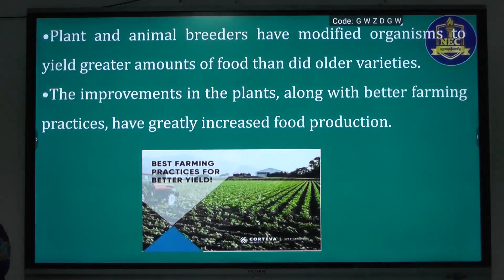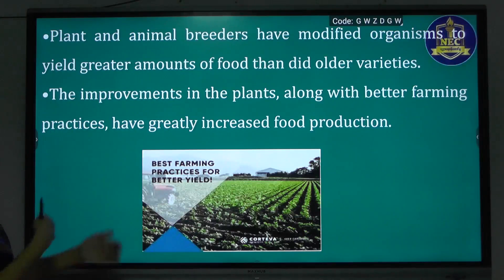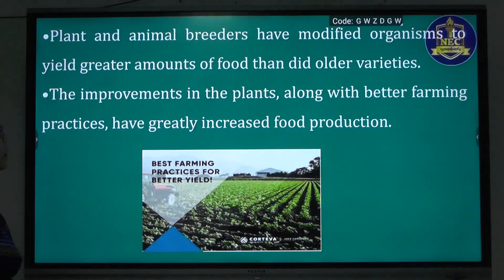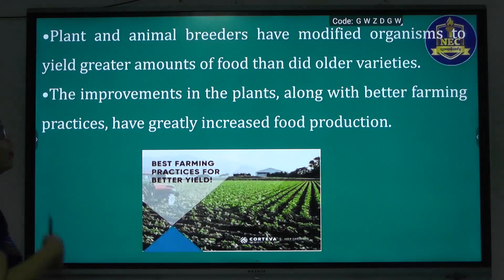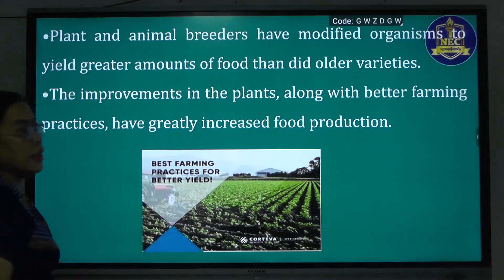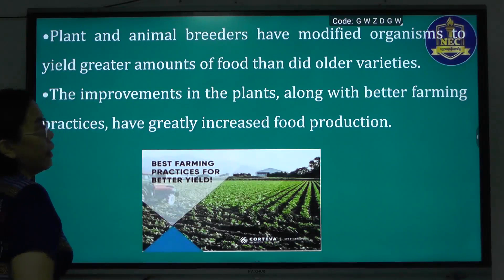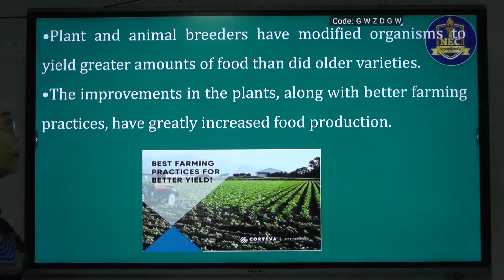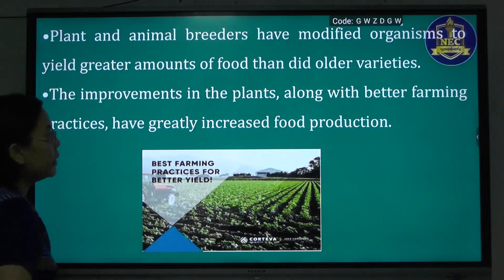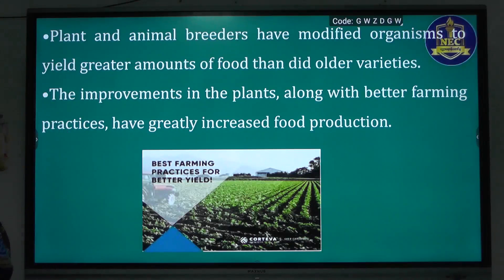Animal breeders are used to yield greater amounts of food. Organisms can be modified to yield greater amounts of food and other varieties. Improvements in plants, along with efforts to combat famine, are key goals.